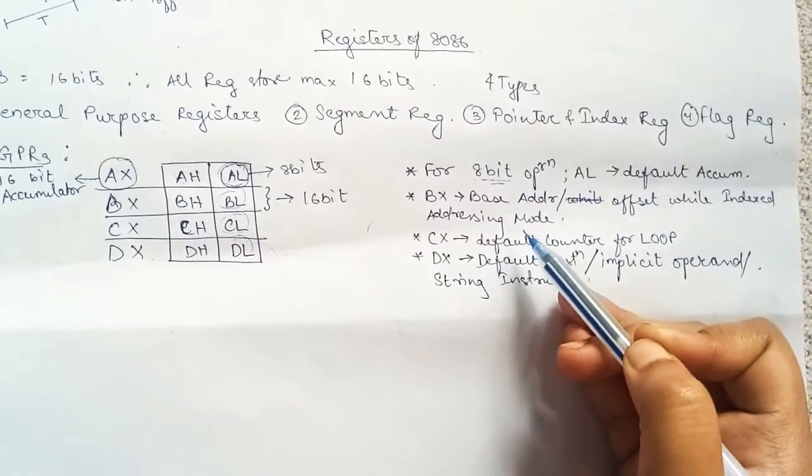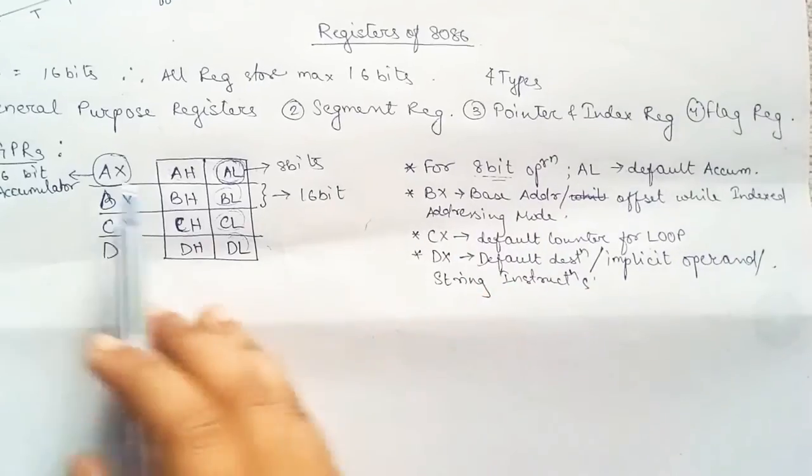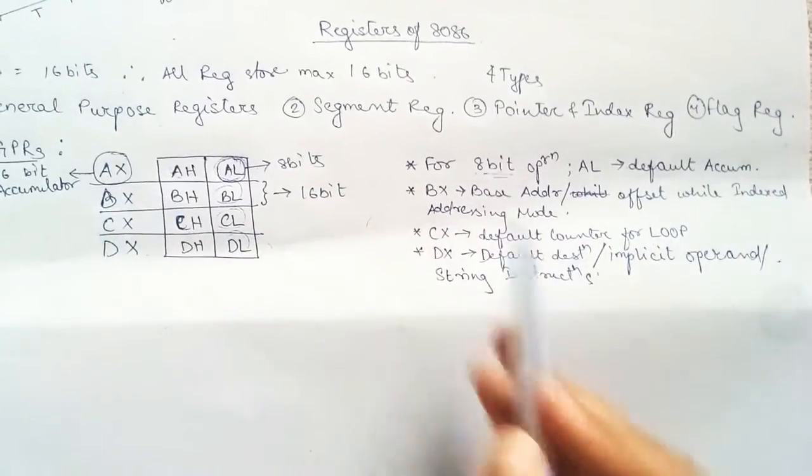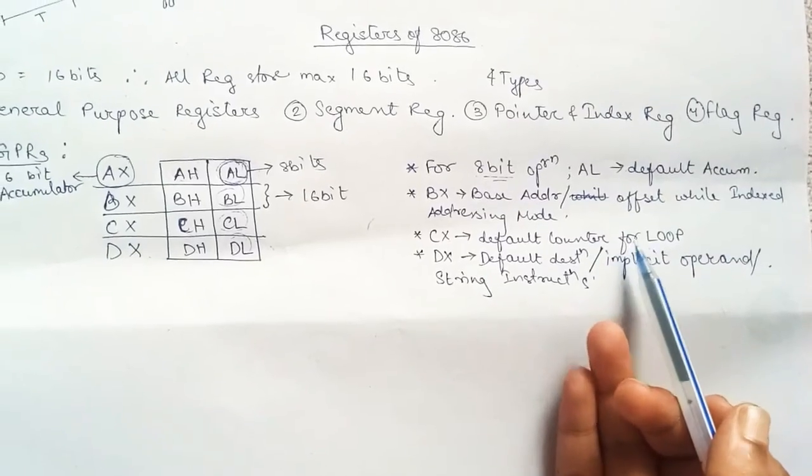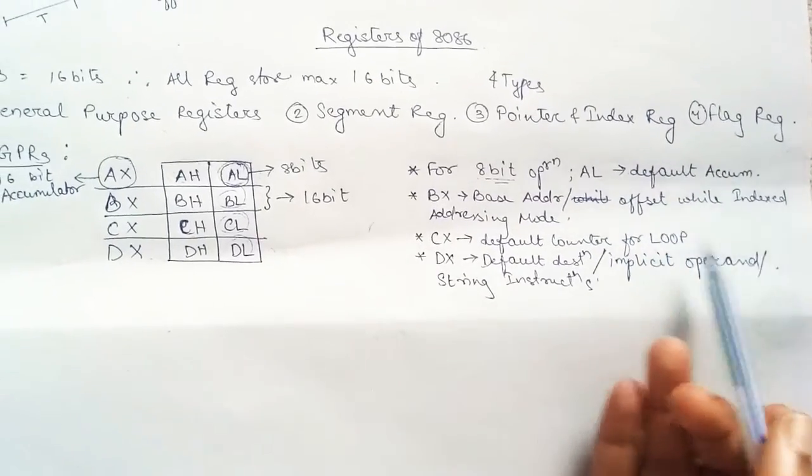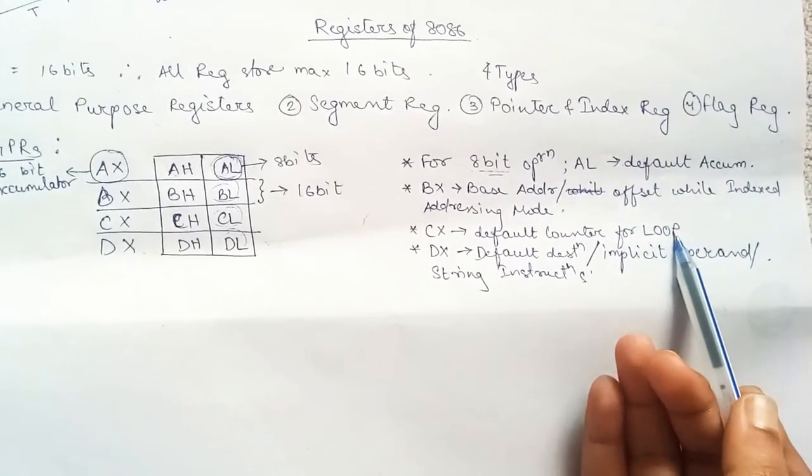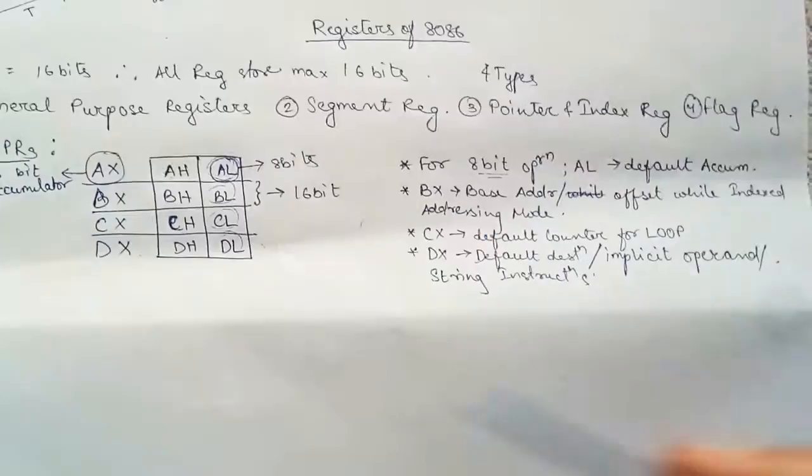Then CX will act as the default counter for the loop instruction. We will read a loop instruction in which the instruction will iterate until this CX condition is positive. If it is positive, then it will iterate.